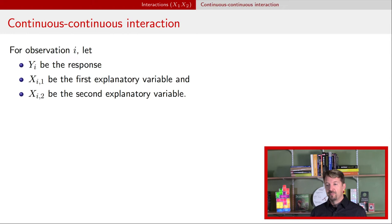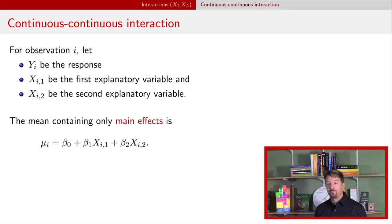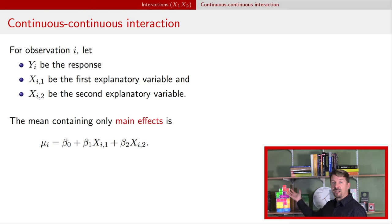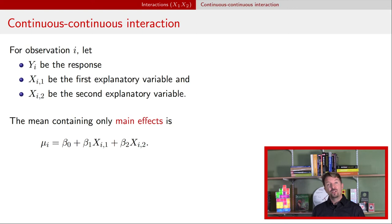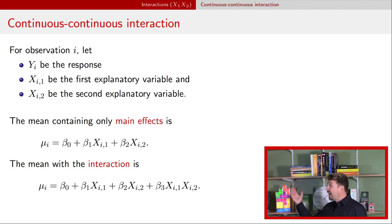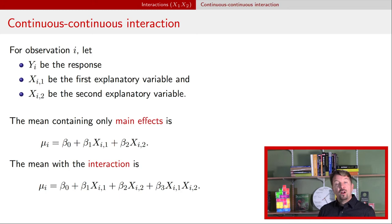Let's start with the continuous-continuous example. In a multiple regression model, our response is Y, with explanatory variables x1 and x2. If we do not have an interaction, we have the main effects model: intercept beta-naught, coefficient beta-1 for x1, and coefficient beta-2 for x2. If we want to include an interaction, we add a third coefficient beta-3 multiplied by x1 times x2 — we literally take the product of those two explanatory variables.